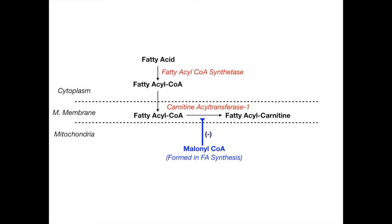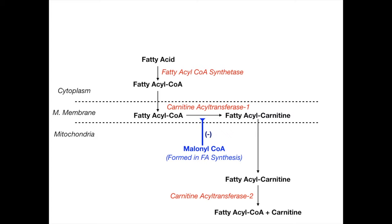After that step, fatty acyl-carnitine enters the mitochondria, where it's converted back into fatty acyl-CoA and the carnitine group splits off. The enzyme that does this is carnitine acyl transferase 2, also known as CAT-2. So CAT-1 puts carnitine in place of CoA in the mitochondrial membrane, and CAT-2 puts CoA back in place of carnitine inside the mitochondria — they have opposite effects.